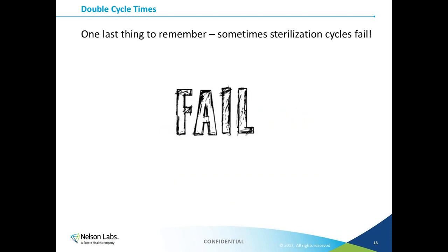One last thing to remember: sometimes sterilization cycles fail. As one EO consultant once said, it is not a matter of if this is going to happen, but when. It is of the utmost importance to design and validate packaging and product which can handle twice the exposure to EO as necessary. If the first cycle fails, there must be a validation in place showing it is acceptable to re-sterilize the product. If this is not in place, the entire load of product must be thrown away — potentially a huge sum of money. This applies to all forms of sterilization, not just EO.